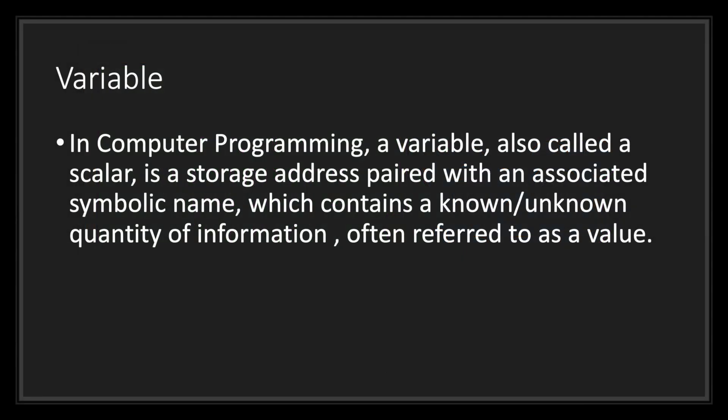Let's take a look at the dictionary definition of a variable. In computer programming, a variable, also called a scalar, is a storage address paired with an associated symbolic name which contains a known or unknown quantity of information, often referred to as a value.